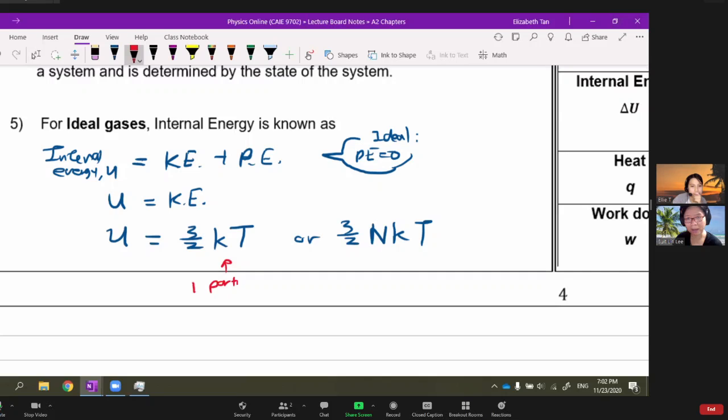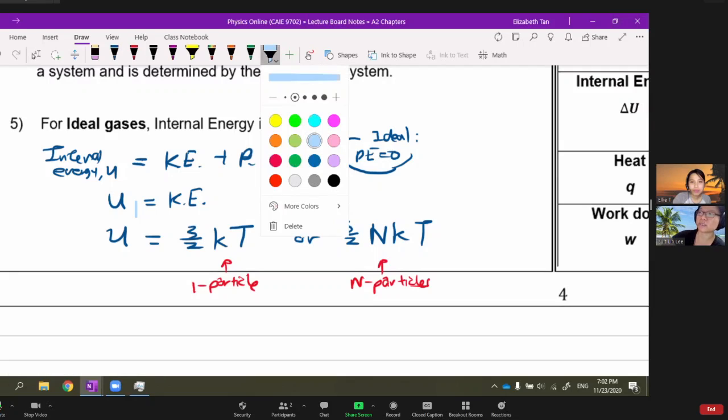This one is for one molecule. It'll be 3/2 NkT for the sample. Please read the question - sometimes they ask for one particle, sometimes for the whole sample. Normally for internal energy they ask for the whole sample because internal energy of one particle doesn't really make any sense. For N particles, you use U = 3/2 NkT if you're very sure the gas in the question is ideal.